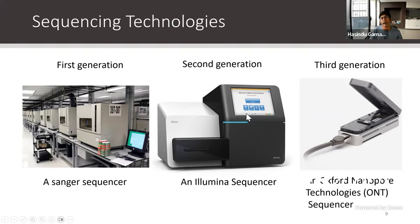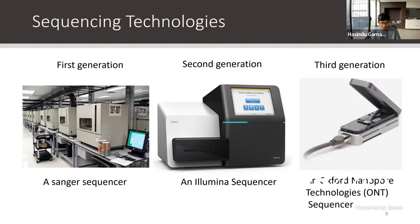But there is this emerging generation called third generation sequencing, which is very interesting because it has many more advantages than second generation. There are two major companies producing third generation sequencers: one called Pacific Biosciences, and the other called Oxford Nanopore Technologies. My talk will mostly revolve around nanopore sequencers. I find it pretty interesting because it's the first portable DNA sequencer — as you can see, the MinION sequencer is very small, very portable, whereas other sequencers weigh like 500 kilograms.